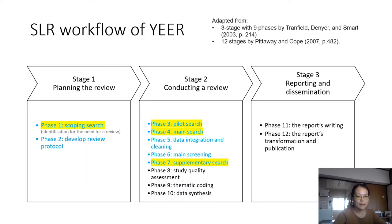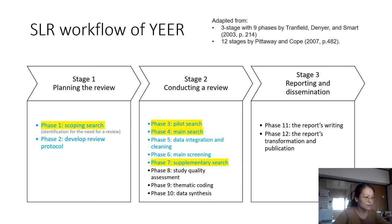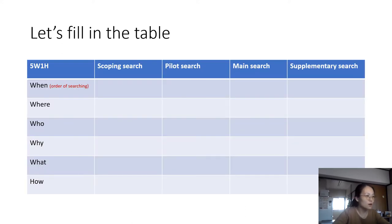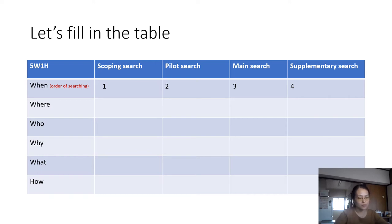I am doing a systematic literature review on the topic of Youth Entrepreneurship Education Research. It's a three-stage research that includes 12 phases. Phase one is scoping search, phase three is pilot search, phase four is main search, and phase seven is supplementary search. In general, if you do a systematic literature review from beginning to end, you encounter them in this order — though it's not always linear, and you may go back to repeat certain steps.